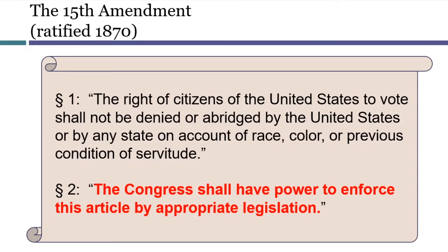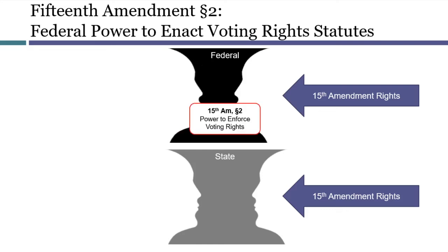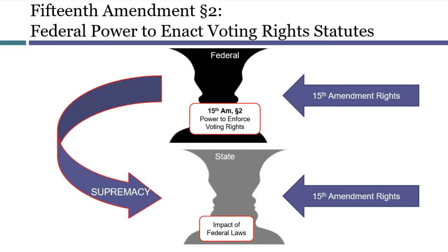Like the other Reconstruction Amendments, the 15th Amendment also gave a new enforcement power to Congress. Congress had a new area of enumerated power, and if Congress exercised that power, it would limit the ability of states to enact conflicting laws. As it happens, it took Congress a long time to pass any effective voting rights legislation. A few statutes were attempted in the 1870s and then the 1950s, but no law designed to enforce the 15th Amendment had much success until the Voting Rights Act of 1965.